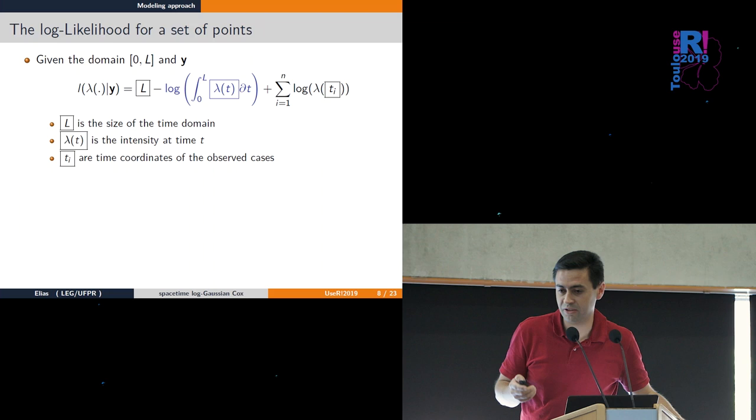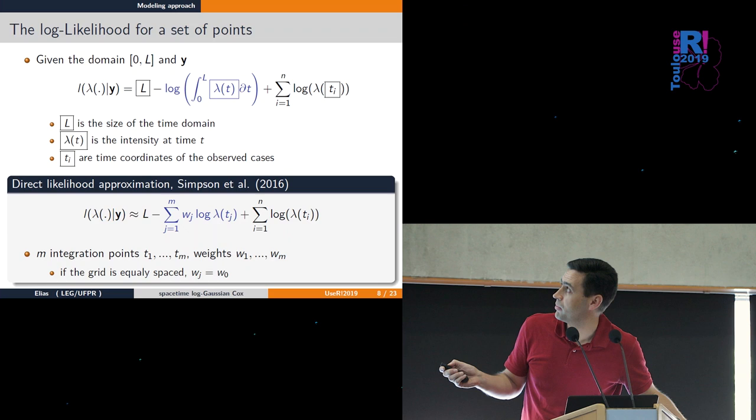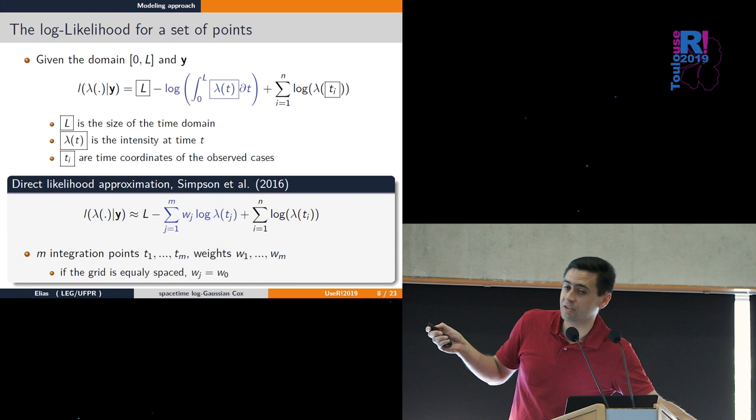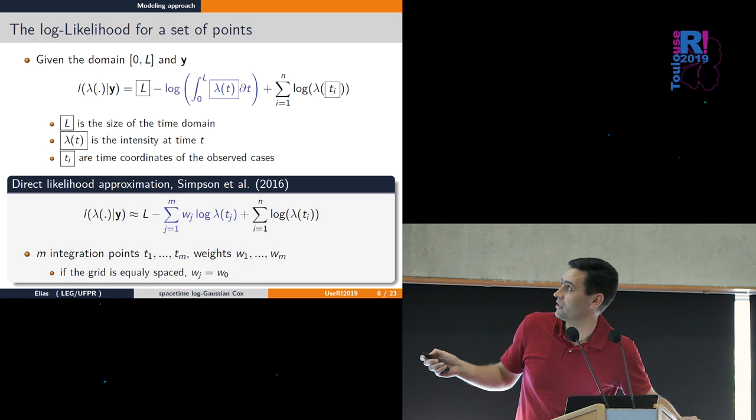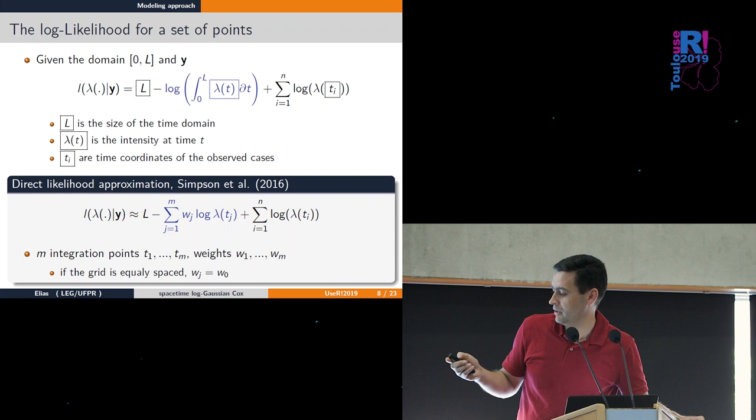In a paper by Daniel Simpson and others, they propose approximating this integral using a set of integration points t1 up to tm with weights. If the grid is equally spaced, we have equal weights.